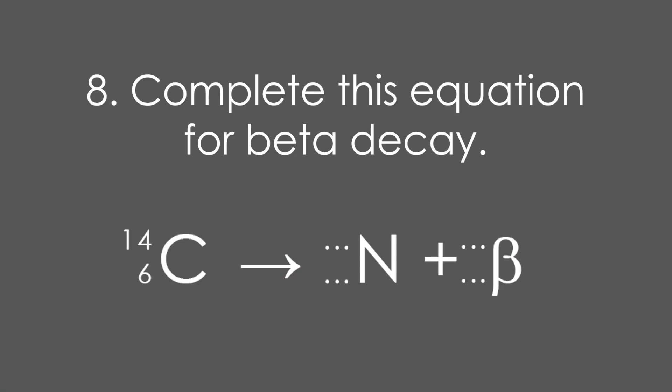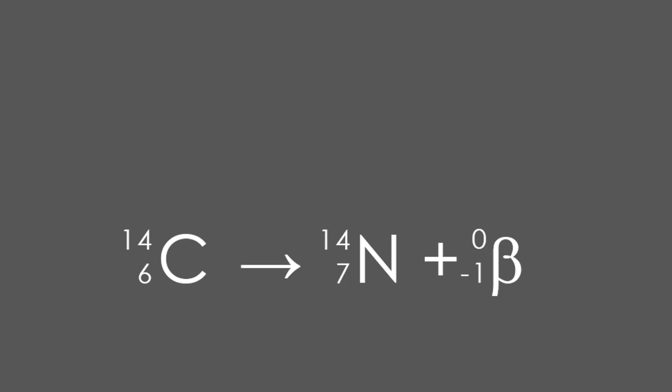8. Complete this equation for beta decay. We know that an electron has negligible mass, so we say zero for that. But it has a proton number or atomic number of minus one, because it's got the opposite charge to a proton. So that means the mass doesn't change, but the proton number goes up by one, turning carbon into nitrogen. A-level people don't forget that to balance lepton number, we must have an anti-electron neutrino emitted also. That's it for GCSE, let's do some just A-level questions.